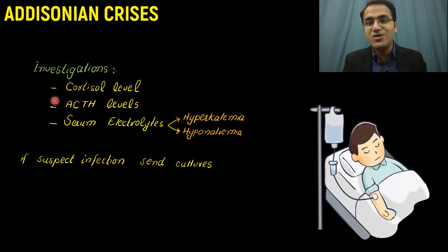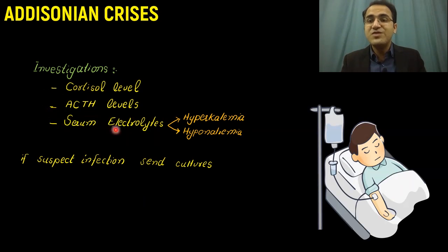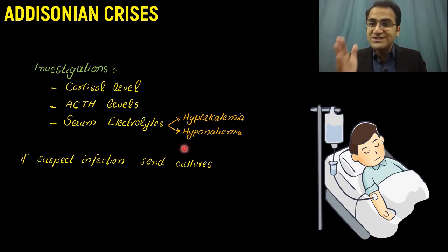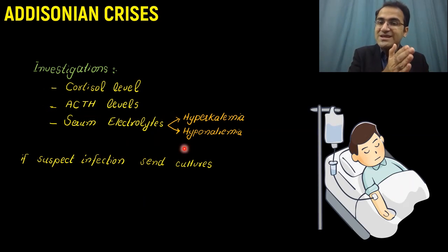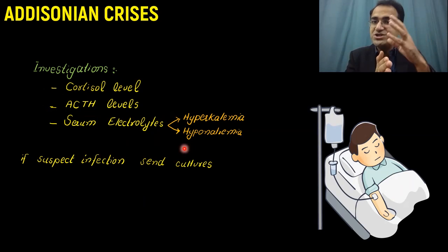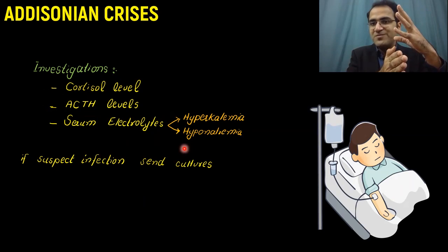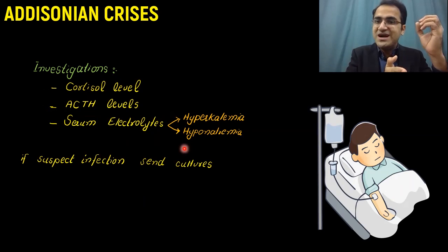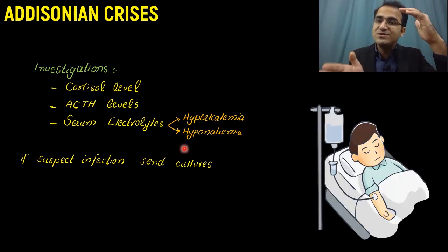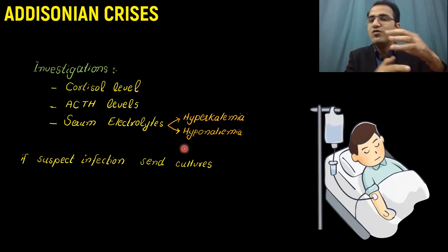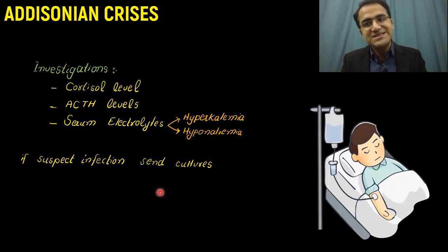Investigations include serum cortisol levels, which will be low. If the pituitary is also involved, ACTH levels will also be low. Serum electrolytes will show hyperkalemia with hyponatremia, because aldosterone normally causes sodium retention and potassium excretion. Without aldosterone, sodium is not retained and potassium is not secreted, resulting in hyponatremia with hyperkalemia. If you suspect any infection, send blood cultures.